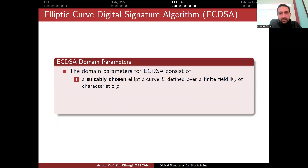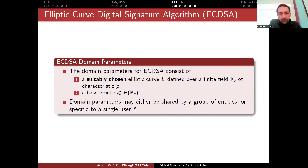Like the digital signature algorithm, we have our parameters. The ECDSA domain parameters consist of two things: a suitably chosen elliptic curve E defined over a finite field F_Q of characteristic P, and the base point G, which is an element of this elliptic curve defined over F_Q. Domain parameters may be shared by a group of entities — for example, in Bitcoin or Ethereum, this elliptic curve and base point G are shared among everybody.